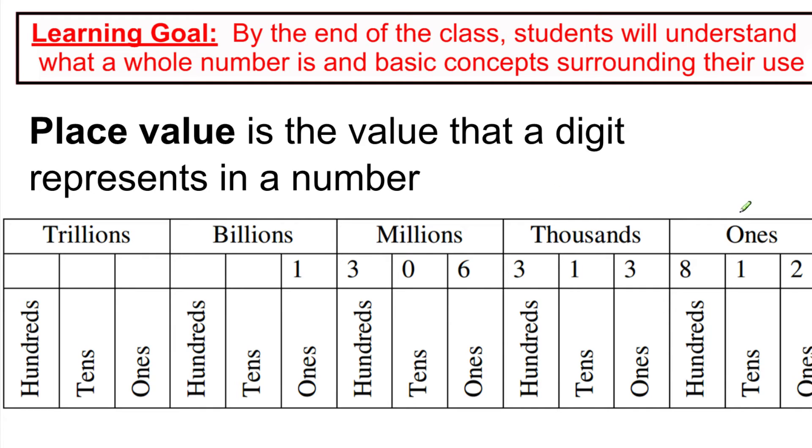Is it in the first group, which we call the ones? Is it in the second group, which we call the thousands? The third group, which we call the millions? And you're going to be responsible to know all the way up through trillions, which is if I have one, two, three, four, five, five different groups of three digits.